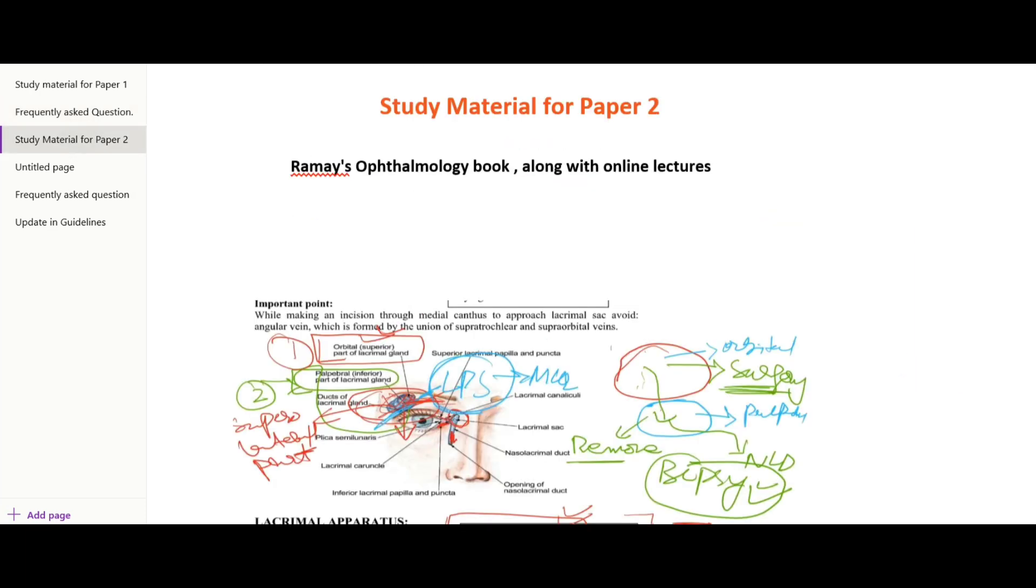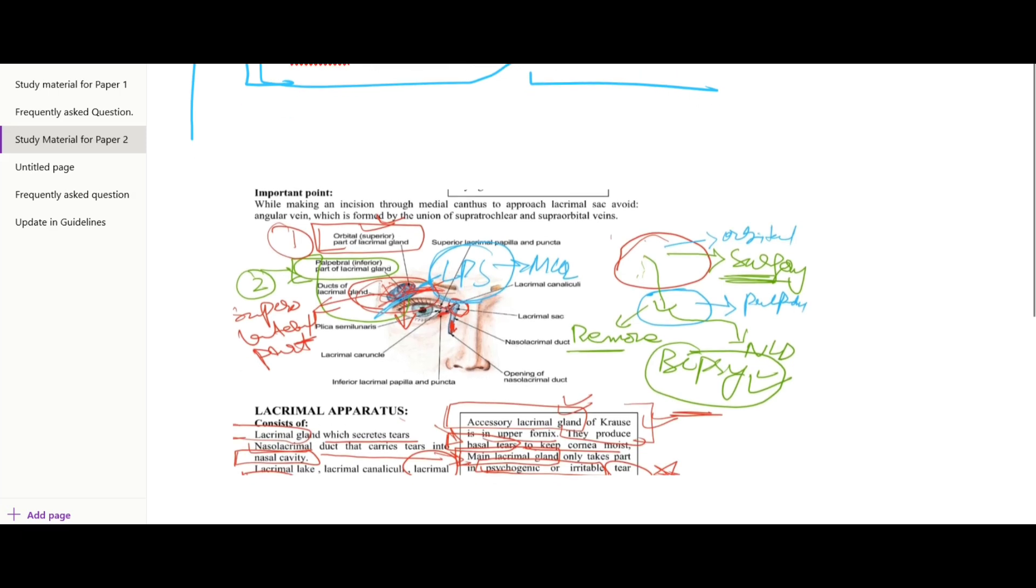And now we will move on to Paper 2. For Paper 2, you have to study Ramay's ophthalmology book in detail. There are also now online lectures available on YouTube. Like this, you will get all the explanations. On the online lectures, you can see that on YouTube.